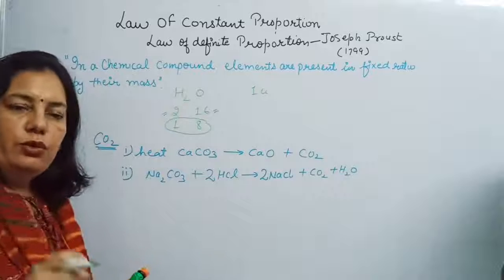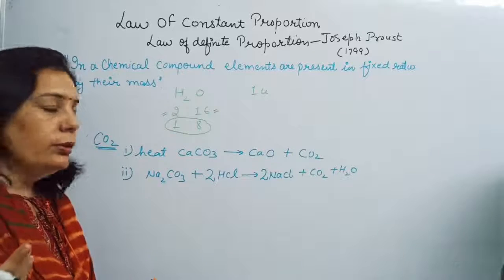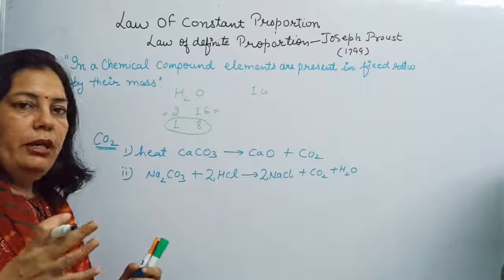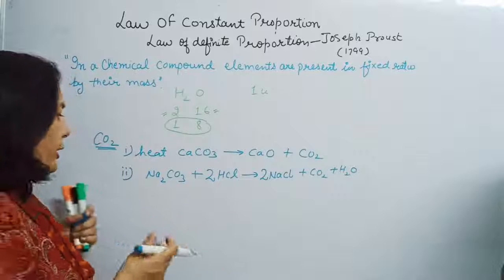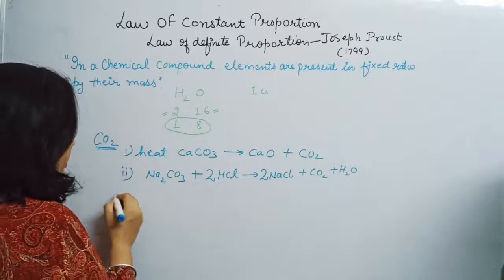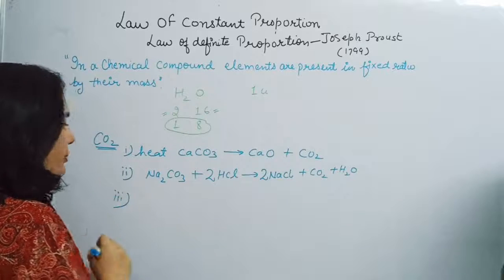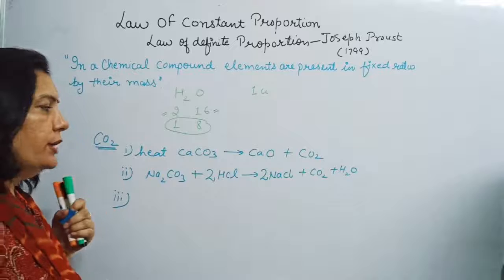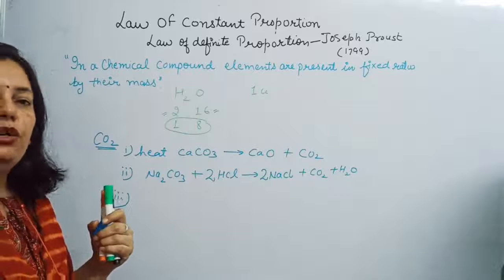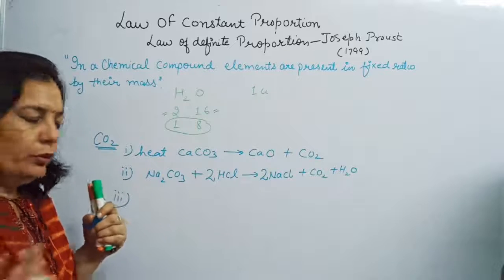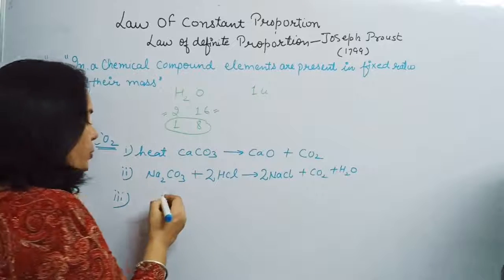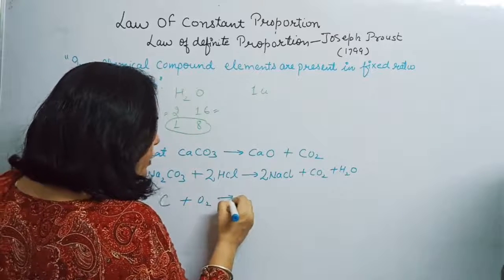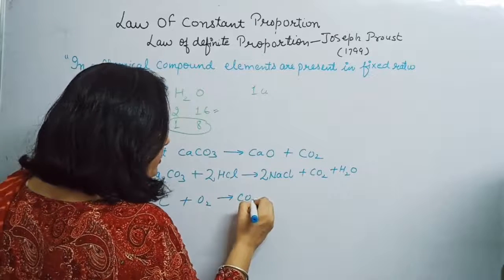That is a different way of chemical reaction to form carbon dioxide. The third chemical reaction by which we can form carbon dioxide is very simple — when we burn carbon, carbon dioxide is produced.